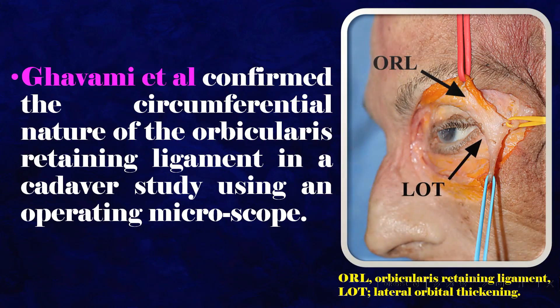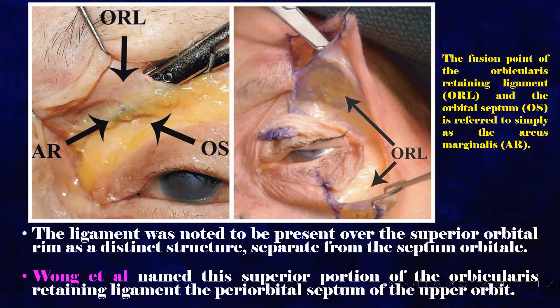Gavami et al. confirmed the circumferential nature of the orbicularis retaining ligament in a cadaver study using an operating microscope. The ligament was noted to be present over the superior orbital rim as a distinct structure, separate from the septum orbitale. Wang et al. named this superior portion of the orbicularis retaining ligament the periorbital septum of the upper orbit.